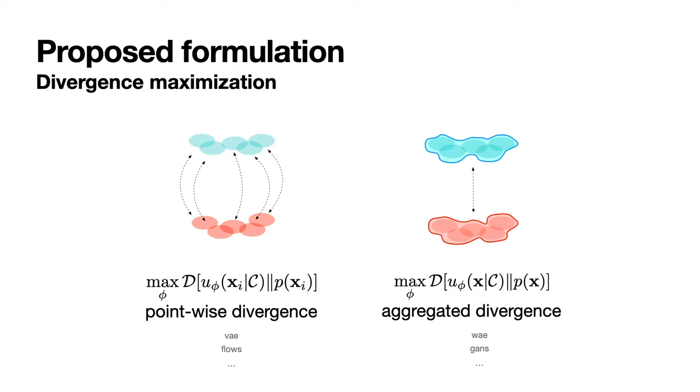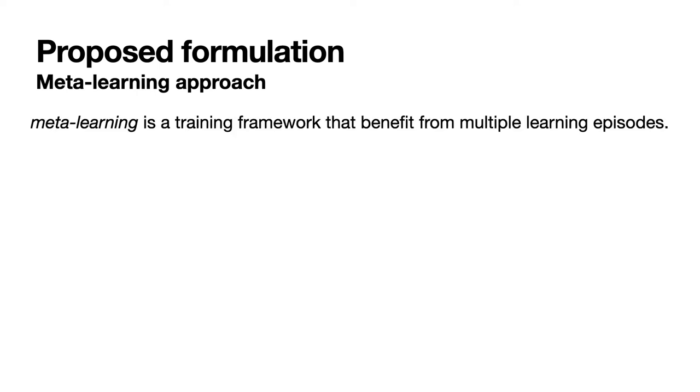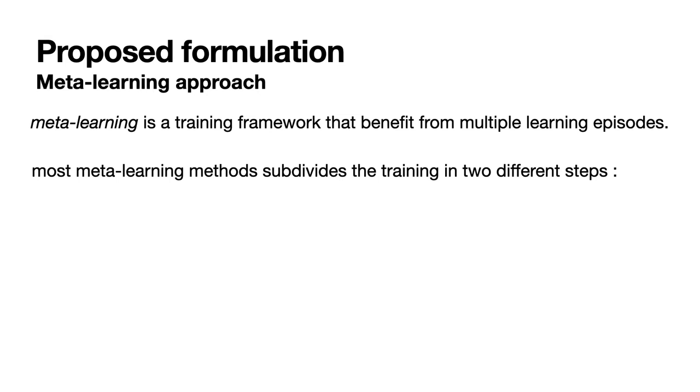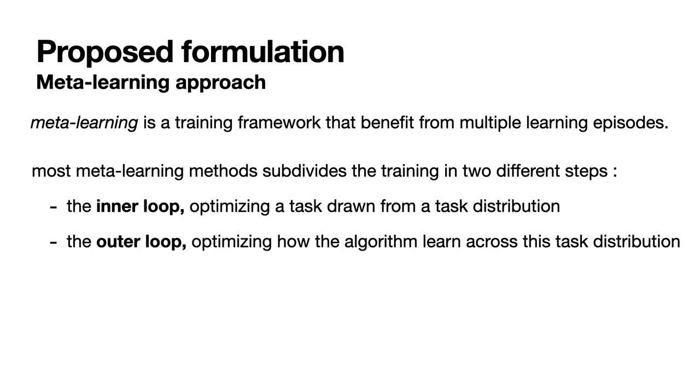However, it would be interesting to have intermediate solutions. To this end, let us introduce meta-learning, a training framework based on splitting the optimization in two different phases: the inner loop and the outer loop. The inner loop optimizes a precise task drawn from a task distribution, for example, reconstructing a subset of a dataset. The outer loop, at the meta level, rather optimizes how the algorithm learns across different tasks.